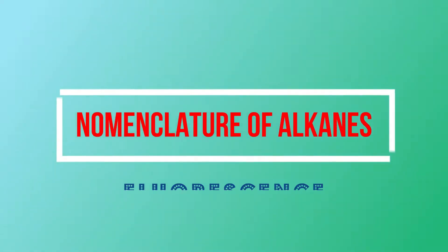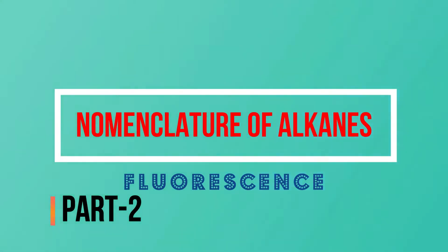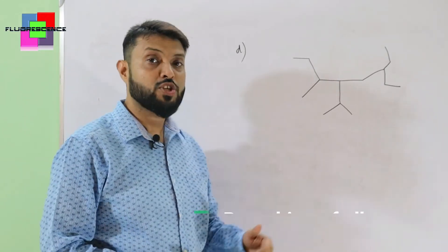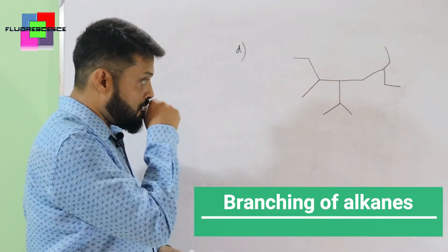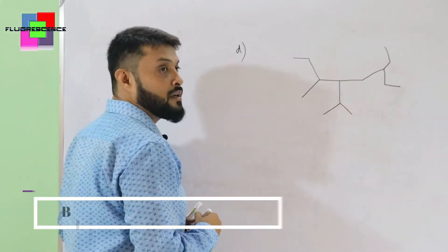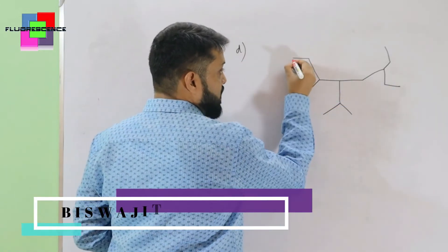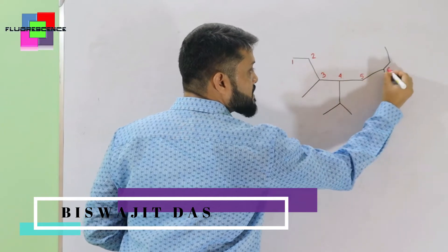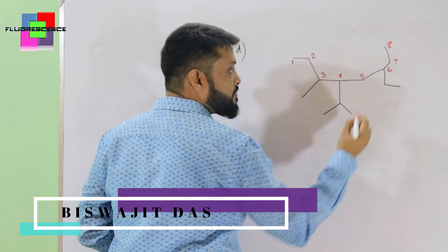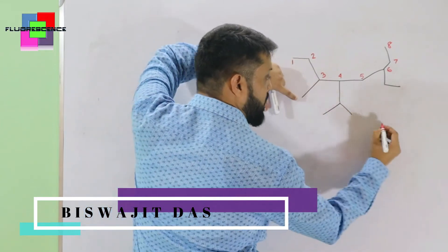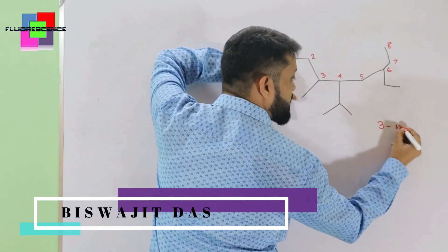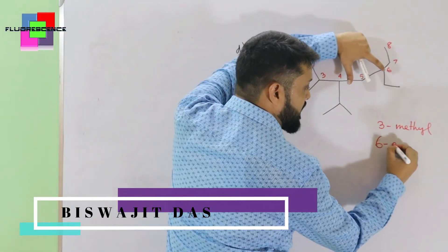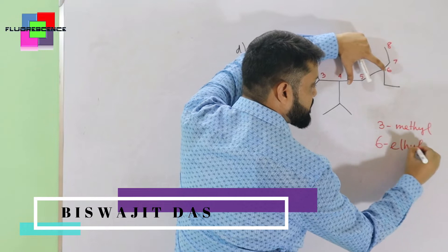Hello everyone, today we learn about the IUPAC nomenclature of alkanes, specifically branching. In this compound, the longest chain is one, two, three, four, five, six, seven, eight — so it is an octane. From position three, a methyl group is coming out, and from position six, an ethyl group is coming out.